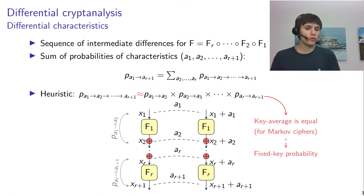That's nice but it's not really what we want because in order to be able to actually compute data complexities and success probabilities accurately, we would need to know the fixed key probability or at least more than the average. So what people have been doing is they've been assuming that the fixed key probabilities are usually close to the average probabilities.